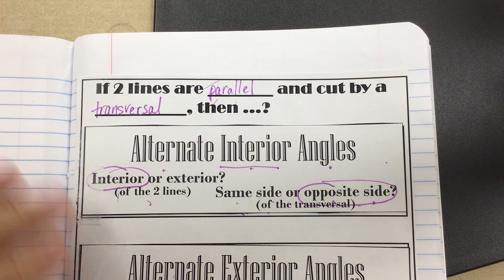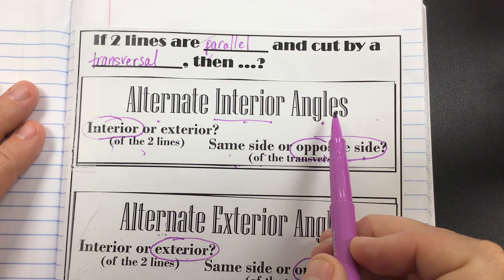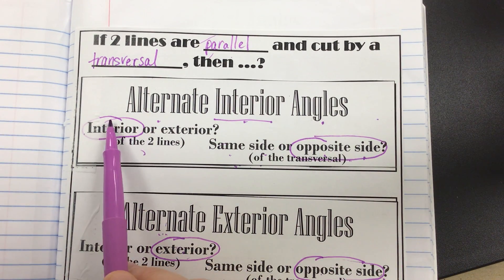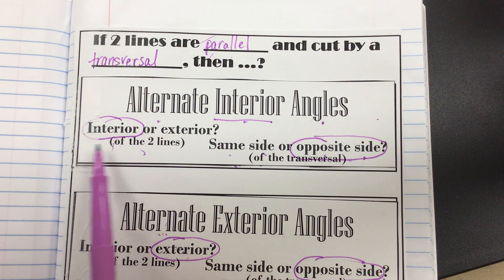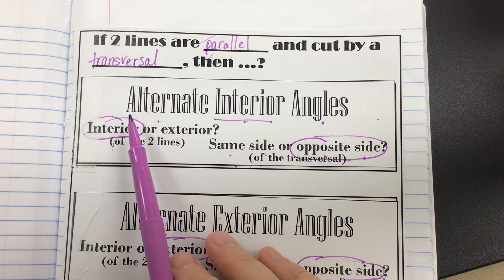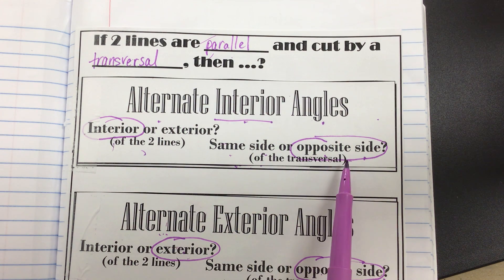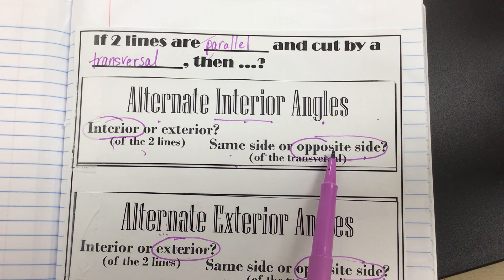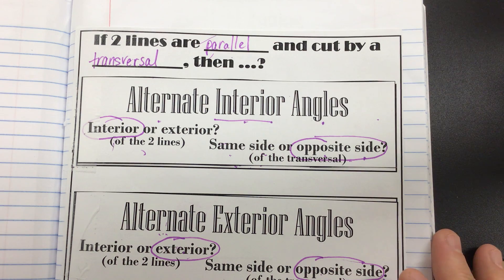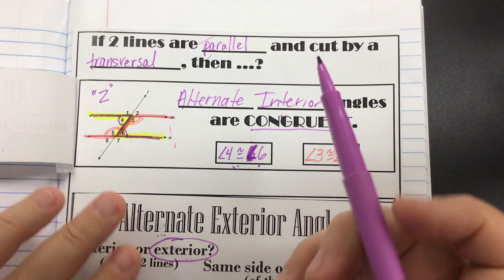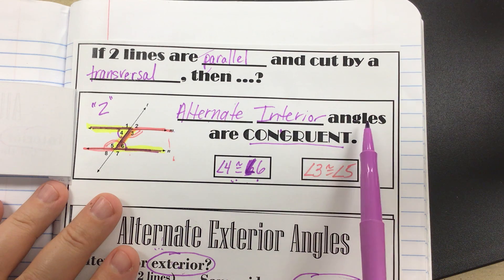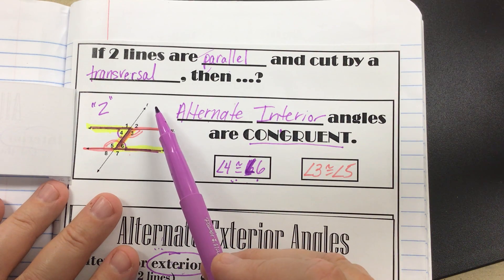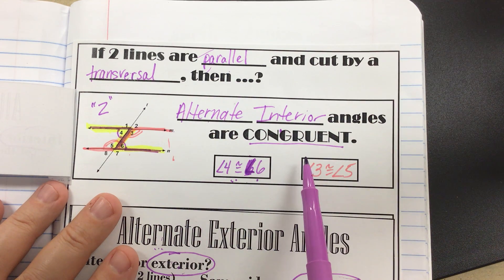The first tab we added was alternate interior angles. So alternate interior angles — if you look at the word interior, they are obviously interior angles, so we're going to circle the word interior. The word alternate indicates the fact that they are on opposite sides of the transversal, not same side but opposite sides. So we fill in: alternate interior angles are congruent. That means if you have two parallel lines cut by a transversal, your alternate interior angles are going to be congruent.